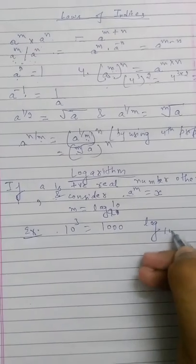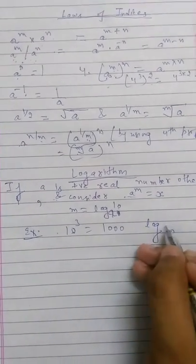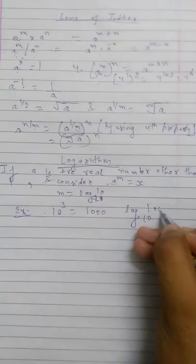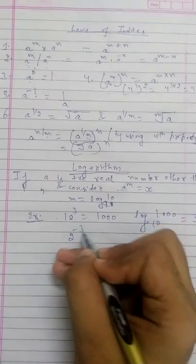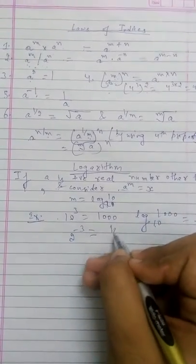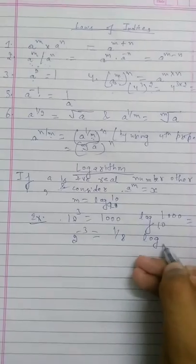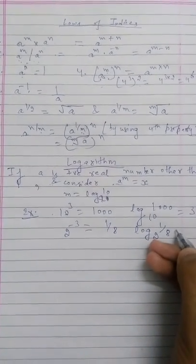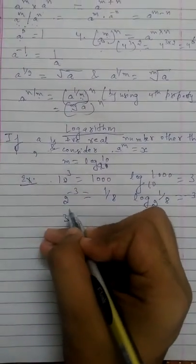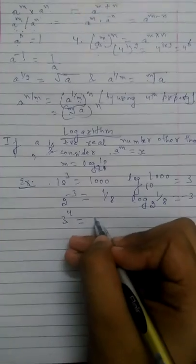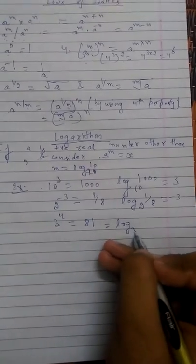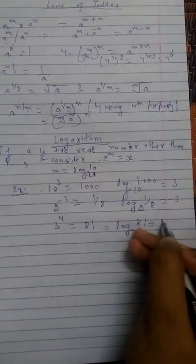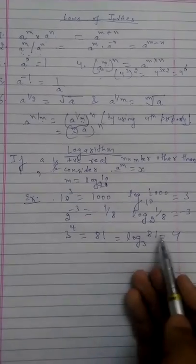For example, 10 raised to the power 3 equals 1000, so log base 10 of 1000 equals 3. If 2 raised to the power minus 3 equals 1 by 8, then log base 2 of 1 by 8 equals minus 3. If 3 raised to the power 4 equals 81, then log base 3 of 81 equals 4 — the answer is the power.